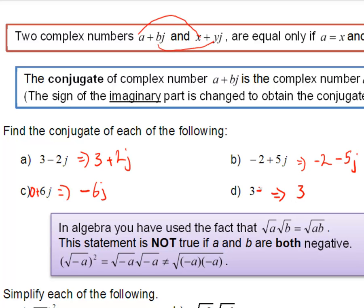The conjugate of 3 is 3. How do we think about that? That 3 plus 0j is now 3 minus 0j. We don't need to worry about the 0, so we just have the 3.